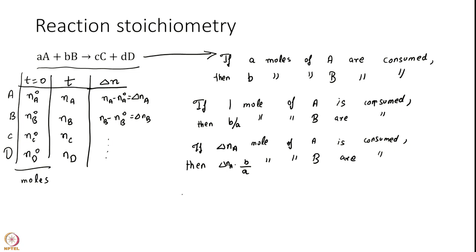But, delta NB is the actual moles of B that have been consumed from this. So, delta NB must equal delta NA into b over a.